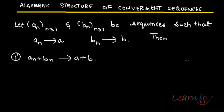In the next few videos we will be talking about the algebraic structure of convergent sequences. So let us have two convergent sequences, namely An and Bn. An and Bn, these two sequences such that An tends towards A and Bn tends towards B.